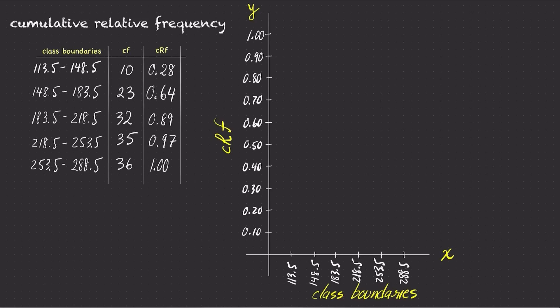There are no frequencies before the first class, so on the x-axis mark a dot right on top of the class boundary at 113.5 to indicate that the cumulative relative frequency at 113.5 is 0.